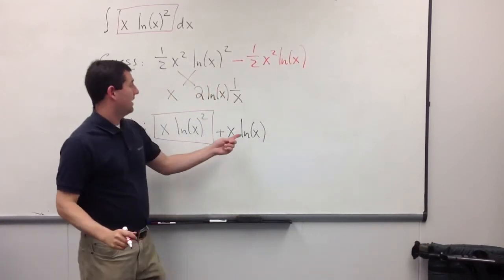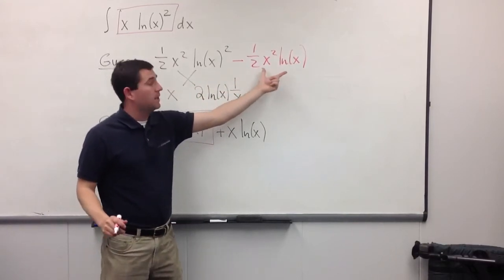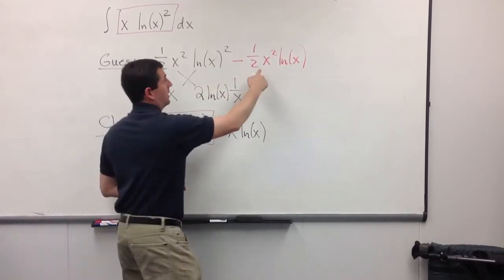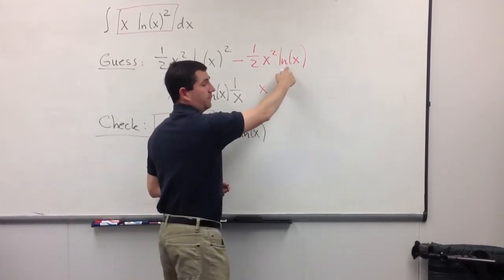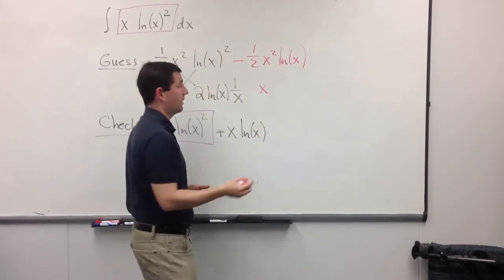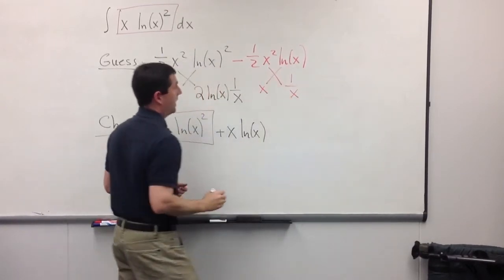Now, I need to check. Well, I've already done this part, so I only need to take a derivative here. Again, I'm going to have to use the product rule. So, I take a derivative of half x squared. I get x. I take a derivative of ln of x. That's just 1 over x. No chain rule will be needed this time.